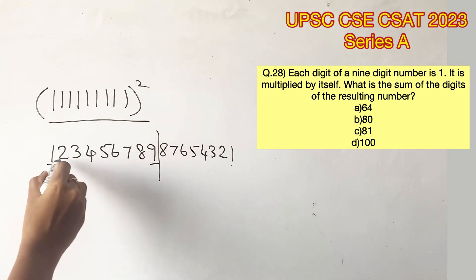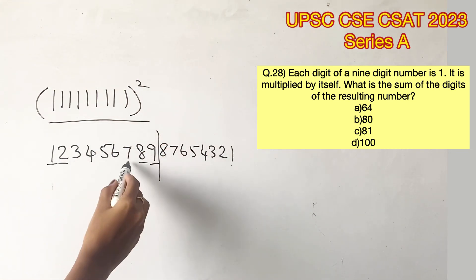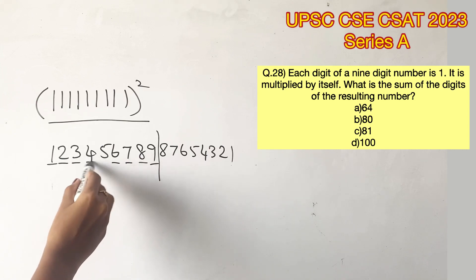So 9 and 1 will give us 10. 8 and 2 will give us 10. 7 and 3 will give us 10. 6 and 4 will give us 10. So there is 40 and the remaining 5 here.